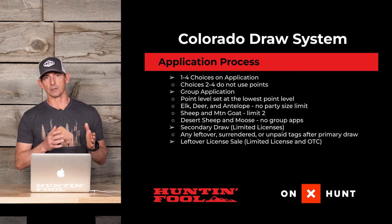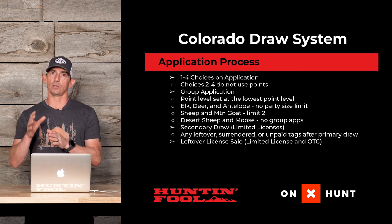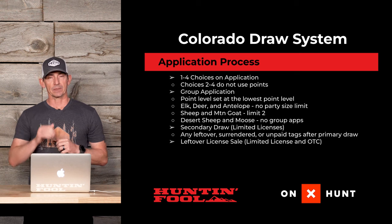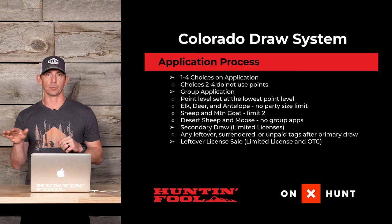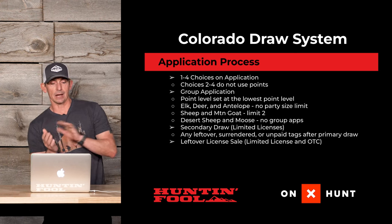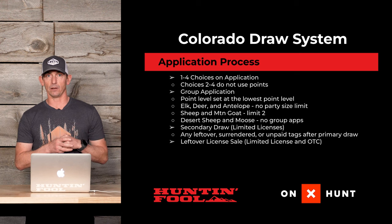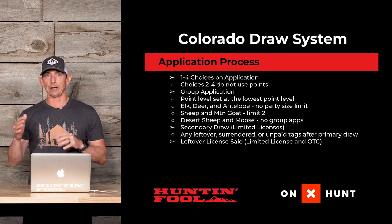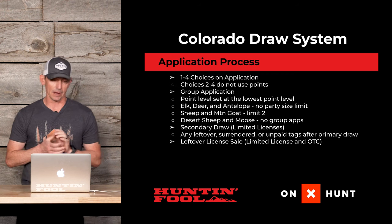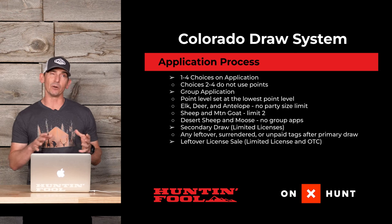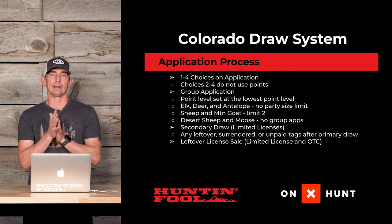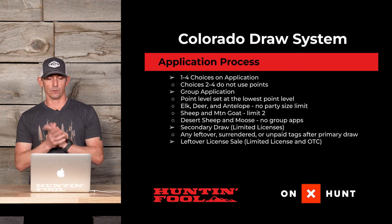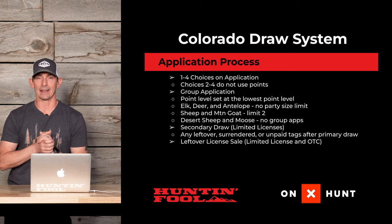For group applications, Colorado differs from most states in that they take only the lowest point holder in the group. For example, if a group of three has eight, six, and two points respectively, the group's point level is two — they do not average points. For elk, deer, and antelope, there's no limit to party size; you can have 15 people as long as there are enough tags. For sheep and mountain goat, the group limit is two, and that's mostly applicable to residents.